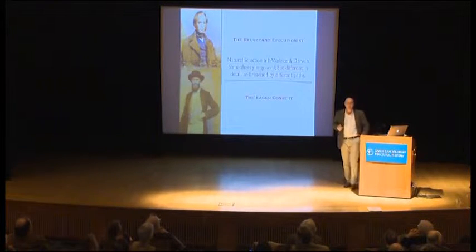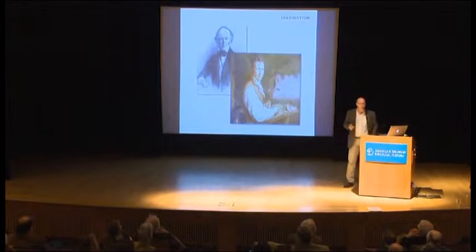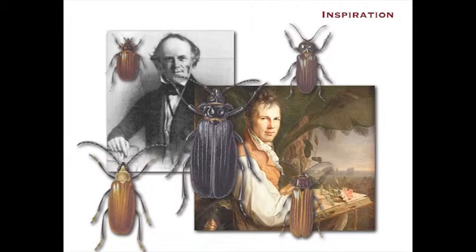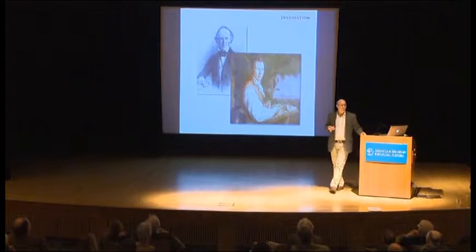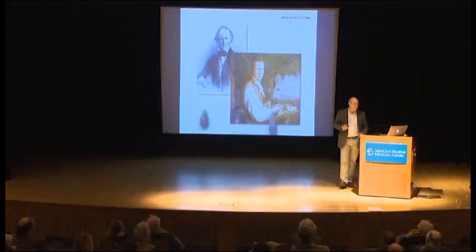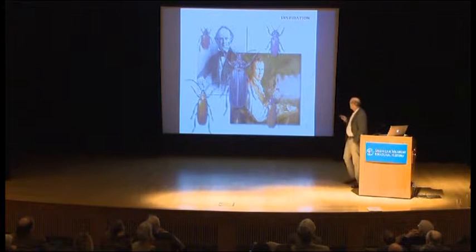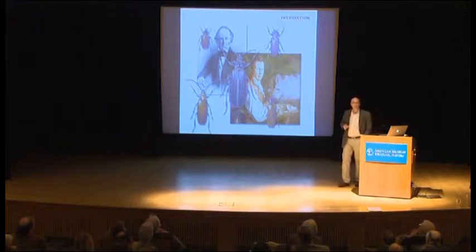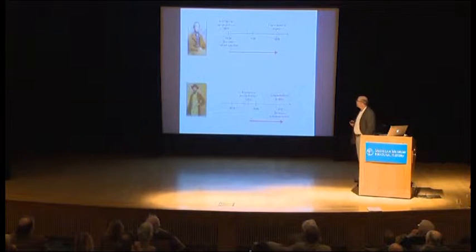So we have the reluctant evolutionist and the eager convert. Both drew inspiration from some of the very same sources: Charles Lyell's classic Principles of Geology, published between 1830 and 1833, and the writings of traveler naturalists like Alexander von Humboldt. As we just heard, they were also quite keen on beetles — natural history, variation, collecting. So we have some common elements of inspiration.